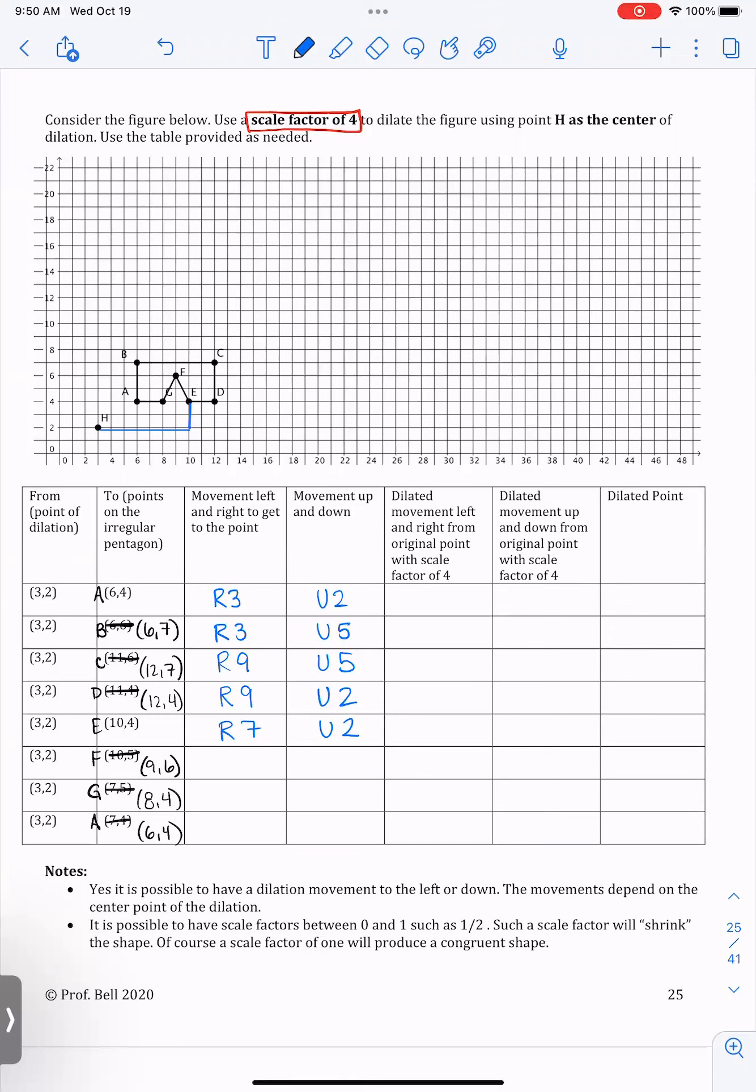And then we're going to keep going to point F, which would be right six. And then up one, two, three, four. Then we're going to go to point G, which means we would go to the right five units and then up two.